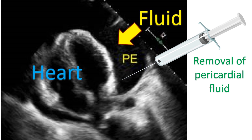Sometimes the collection of fluid can be due to bleeding into the pericardial cavity. This occurs most commonly in cancer — malignant pericardial effusion. Usually it is cancer of other organs spreading to the pericardium, secondary rather than primary cancer of the pericardium, which is very rare — mesothelioma.